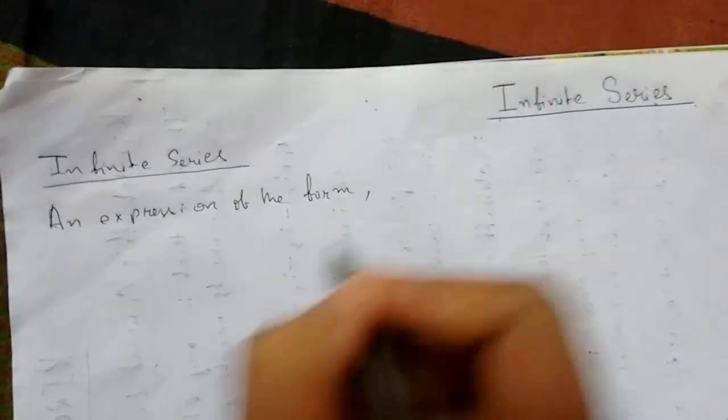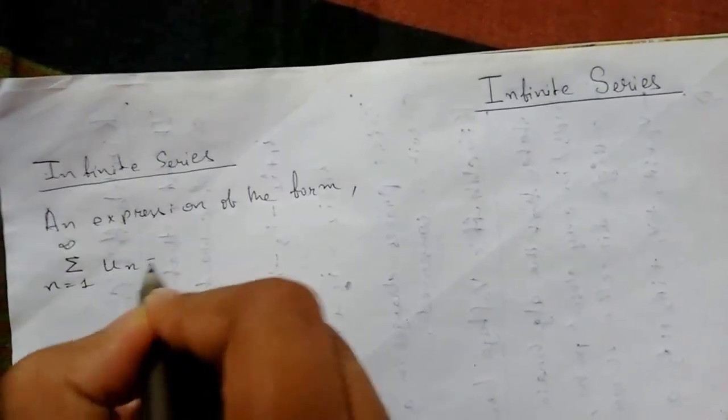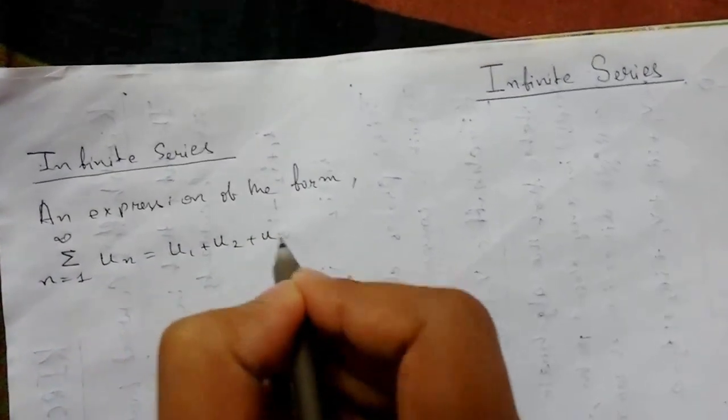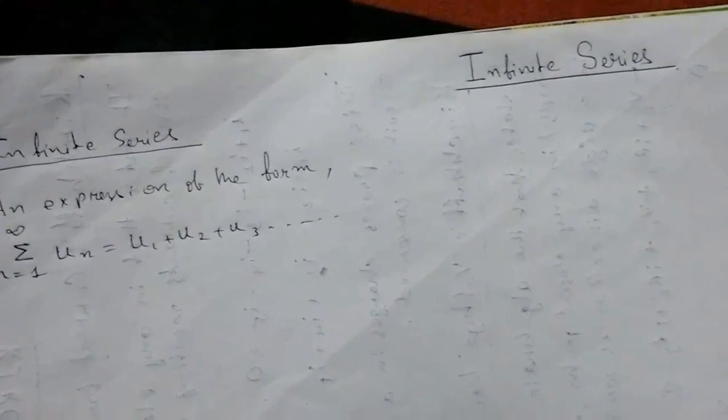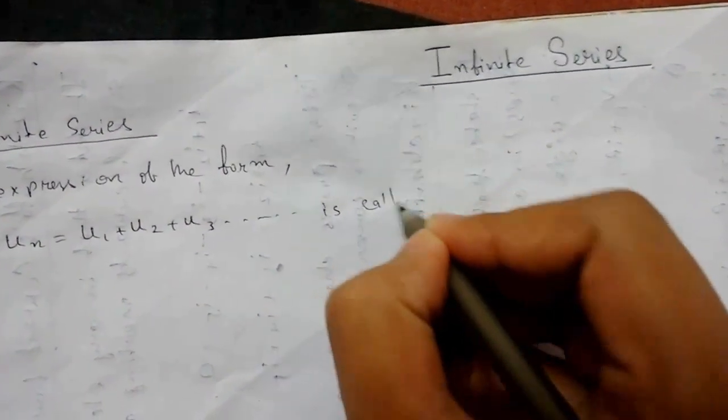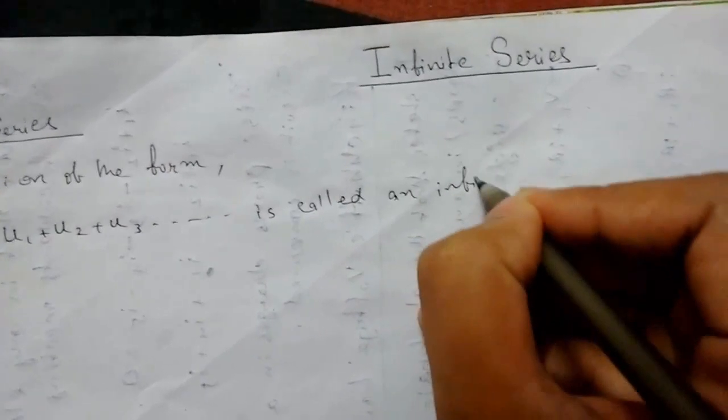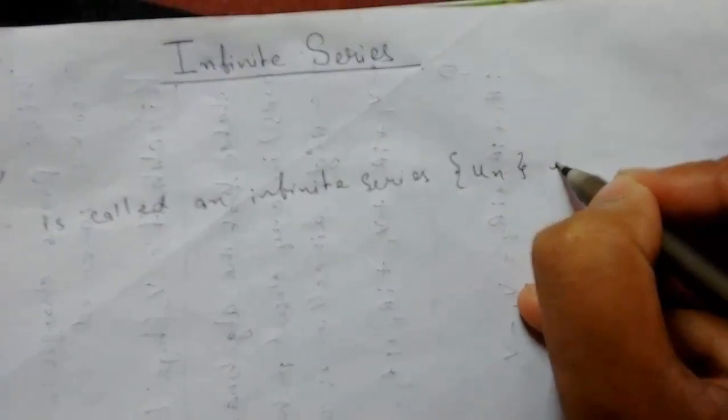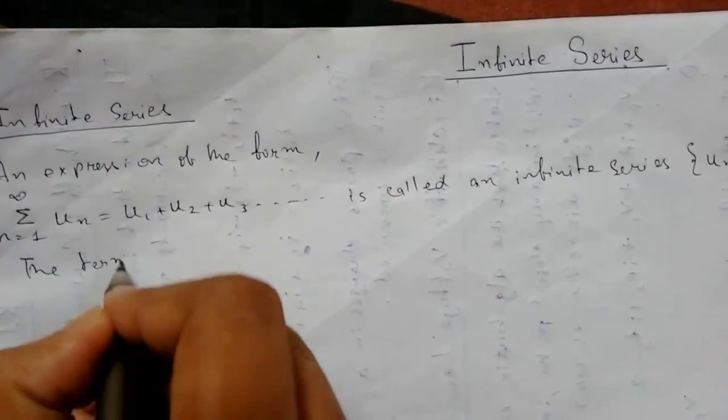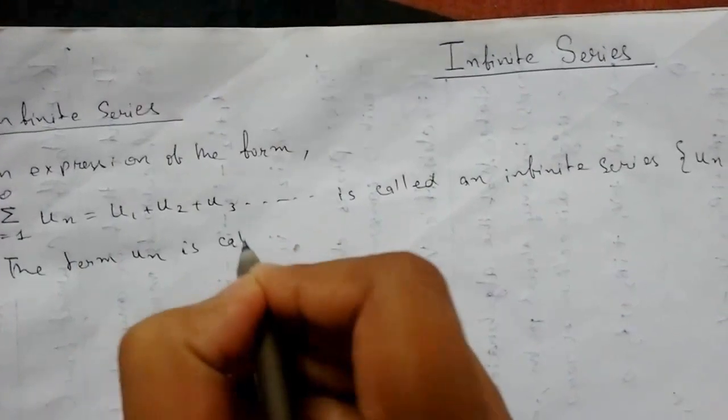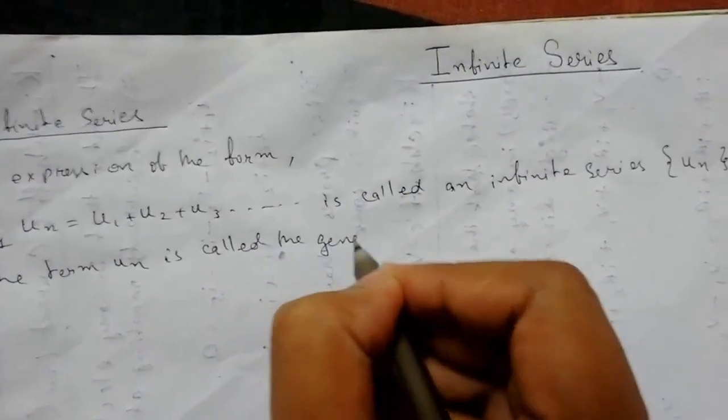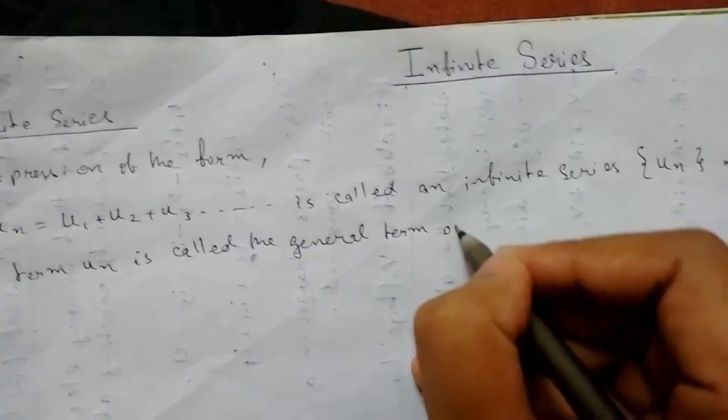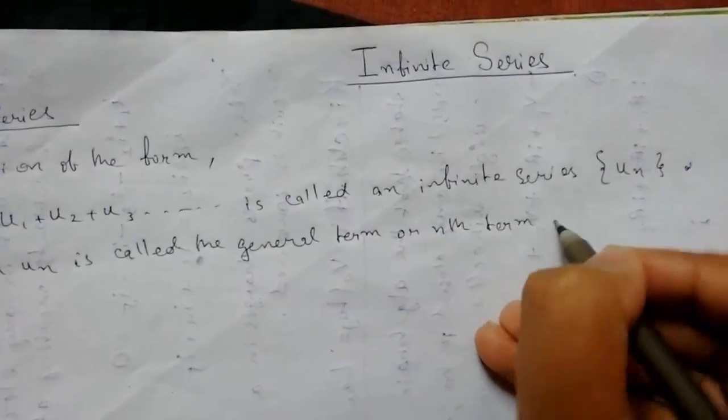Summation n from 1 to infinity UN, which is u1, u2, u3 up to infinity, is called an infinite series of UN. The term UN is called the general term or nth term of the sequence.